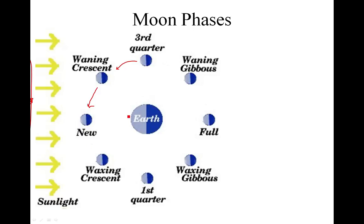So let's start with the new moon phase. You're on Earth, obviously — you look up at the moon. These are your sight lines. Do you see any of the lit-up part? No. So you see nothing in the sky — that's a new moon. So once every 29 and a half days, you look up for the moon and there's no moon. New moon phase.